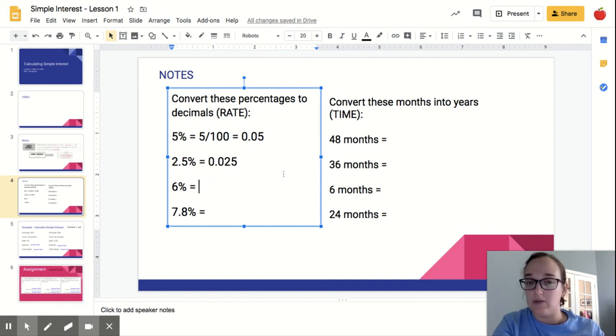Six percent, remember the imaginary decimal is behind the six because that's a whole number. So we go one, two, that's six hundredths, which is 0.06. And this is all going to be filled in on your notes page when you go back to your slides. 7.8%, one, two places. So 0.078.